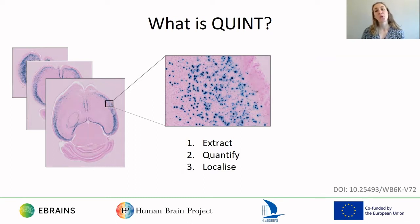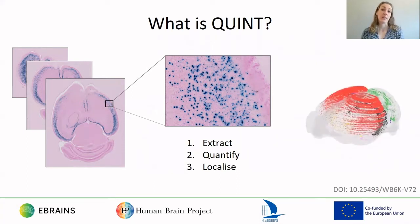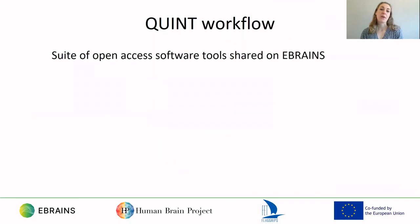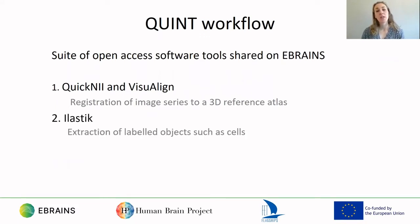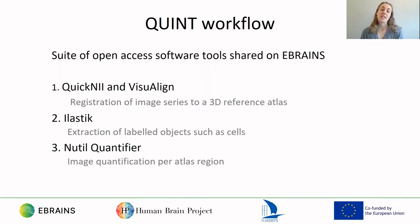As output, the QUINT workflow produces a series of reports and coordinate files that can be visualised with our 3D Atlas viewer. The QUINT workflow combines several open access tools shared on the eBrains platform and takes you through a series of steps including linear and non-linear registration of the images to a reference atlas with the QUINT and visual lines software, extraction of the labelled objects with the elastic software using machine learning algorithms, and the quantification of your objects per atlas region with the new tool quantifier software. In this tutorial I'll give you a quick demo of each of the steps involved and hopefully encourage you to consider using it for your own research.